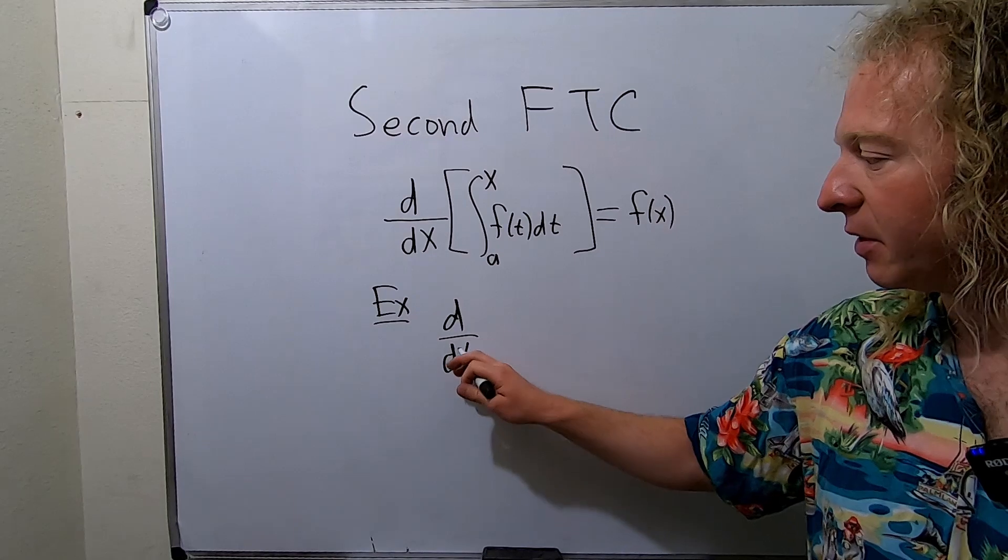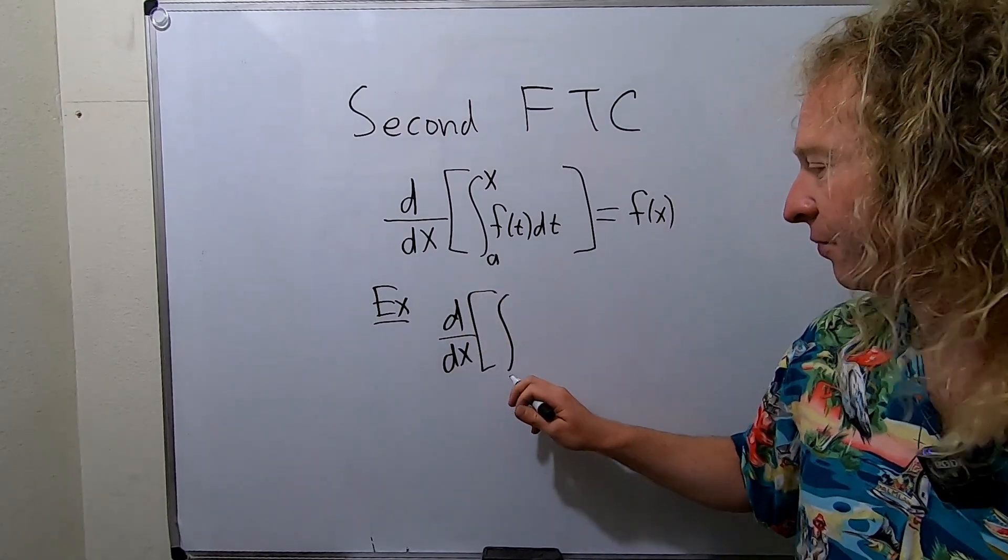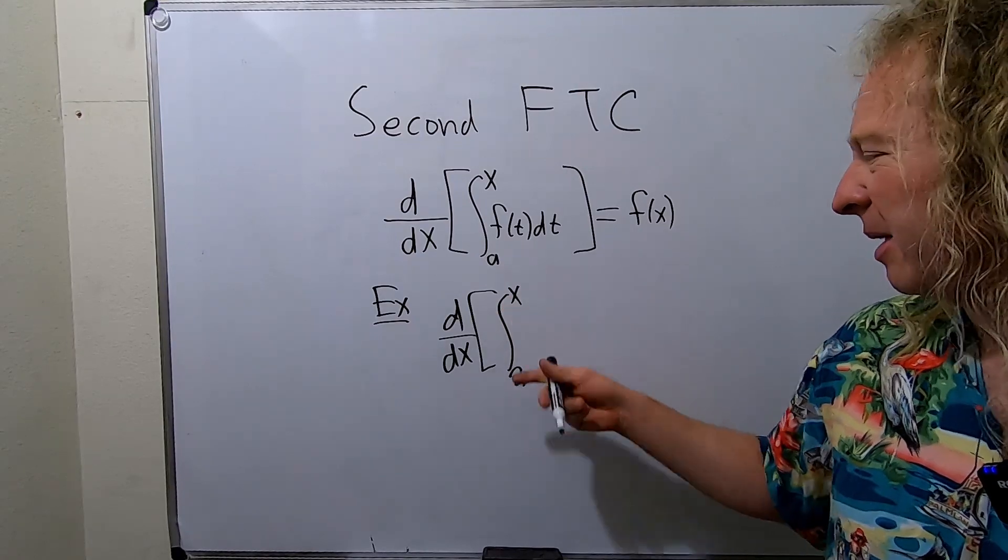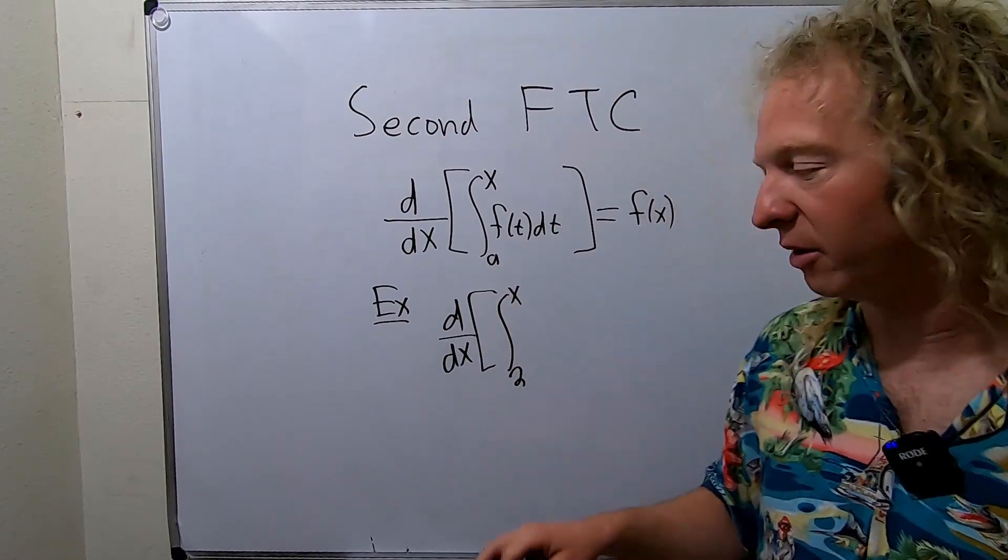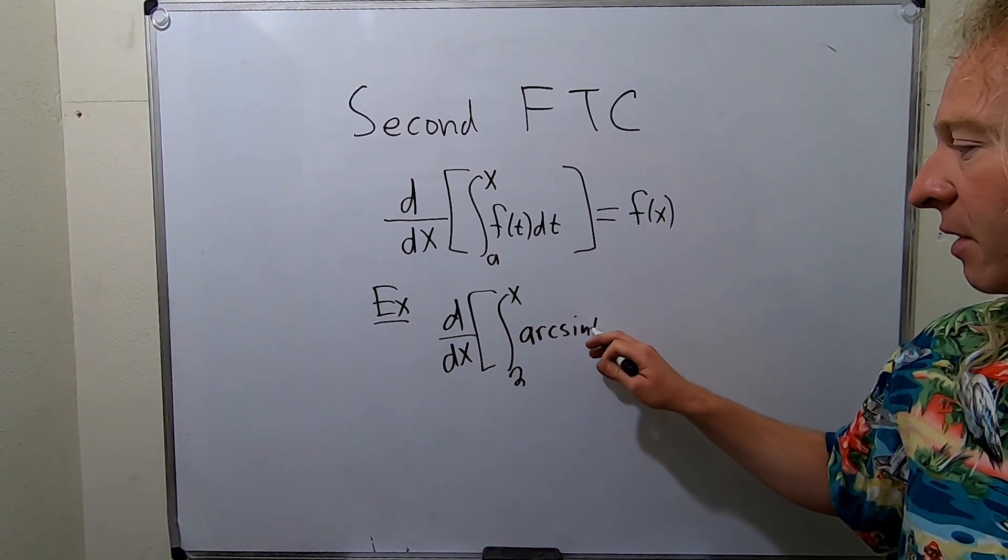So if you have d dx of, let's say, the integral. Let's make the a a 2. Let's make this an x. Let's put something here. Oh, let's put something weird here, something that you might not be familiar with. Arc sine of t dt.